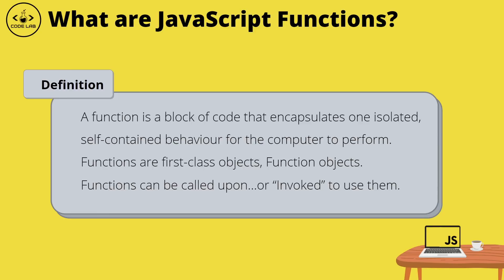Another thing to note is that in JavaScript, functions are in the category of objects when it comes to data types. They're what you would call first-class objects, because they can have properties and methods just like any other object — so we can call them function objects. What distinguishes them from other objects is that functions can be called upon, or invoked, and the code inside that function runs only when it's needed, meaning only when it's called or invoked. Let's head into VS Code now and look at the two most common ways to create functions.